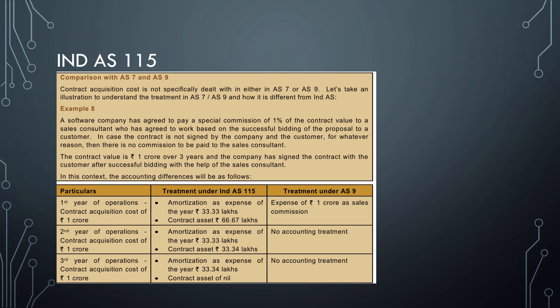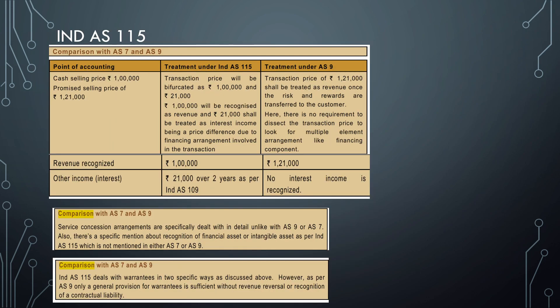The accounting difference will be as follows: First year, contract acquisition cost 1 crore, that is amortization expense of 33 lakhs and contract asset is 66.67 lakhs. In AS 9, it will be 1 crore as sales commission expense and year 2 and year 3 no treatment. Whereas in IND AS 115, the contract asset will be amortized - 33.34 lakhs in year 2, and lastly the contract asset will be nil because that entire value of 1 crore is amortized in the ratio of 66.67 to 33.34. Hope all of you have followed and you got this.